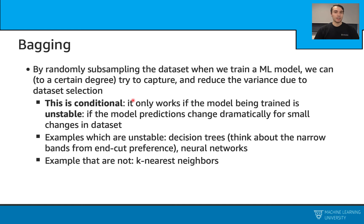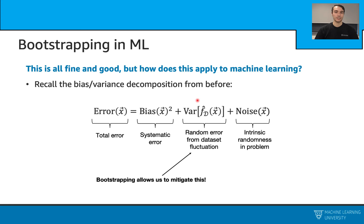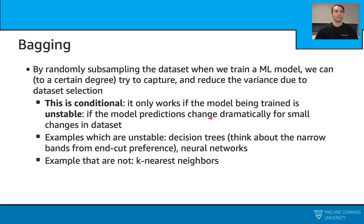By randomly subsampling the data set and applying this averaging approach, we can, to a certain degree, try to capture and reduce the variance due to the data set selection — the second term in the bias-variance decomposition. But this effect is conditional: it only works with models that are unstable, meaning they can have dramatic changes even for small changes in the data set. Examples of such models are decision trees and neural networks. A model this doesn't work for is k-nearest neighbors.